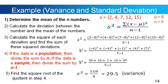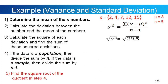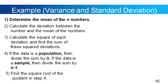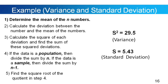Now for the fifth and final step: find the square root of the quotient from step 4. So s equals the square root of 29.5, which equals 5.43. This is our standard deviation. To summarize: our variance is 29.5 and our standard deviation is 5.43.